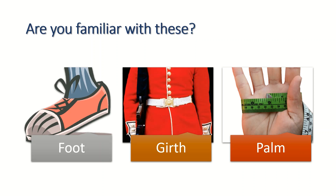Here are some more terms which I hope you are familiar with. The foot is the measurement equal to the length of an individual's foot, standardized by King Henry I because his foot was 12 inches long. The girth is the measurement around one's stomach, or usually refers to your belt measurement. And the palm is the width of your four fingers when they are placed together.